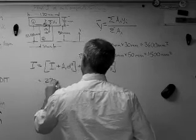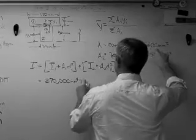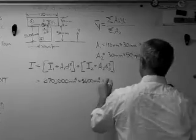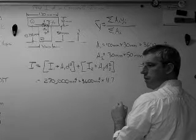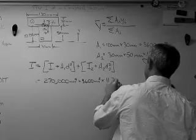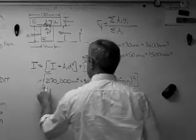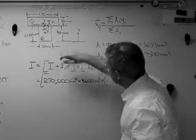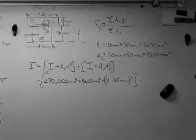So, we have 270,000 plus A1, 3600, times D1 squared. Well, D1 was 11.765, I believe. Let me check. Yeah, 765 millimeters squared. So, that's the contribution of box one. I of box one plus this extra term here, this A1, D1 squared, that accounts for the fact that the centroid of box one is not on the centroid of the entire composite shape.